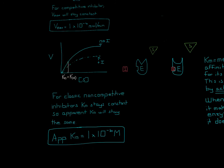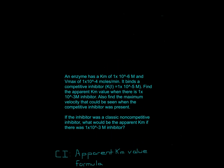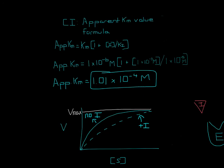Since some enzymes are taken out of commission, the maximum velocity decreases. For example, if we had 10 enzymes and 5 become inactive after non-competitive inhibitor binding, those 5 can't produce as much as the original 10 — that's why Vmax decreases. But the 5 remaining active enzymes still have the same individual Km, because inactive enzymes are excluded from Km measurement. That's why the apparent Km remains 1×10⁻⁶.